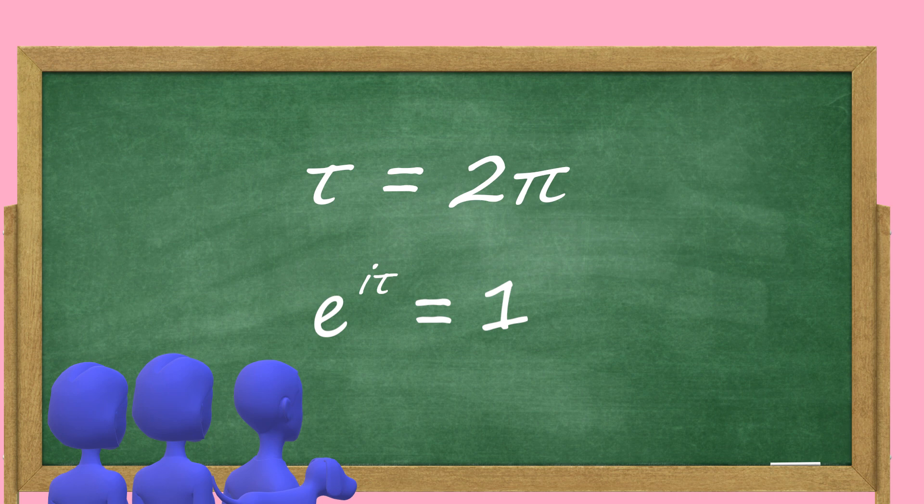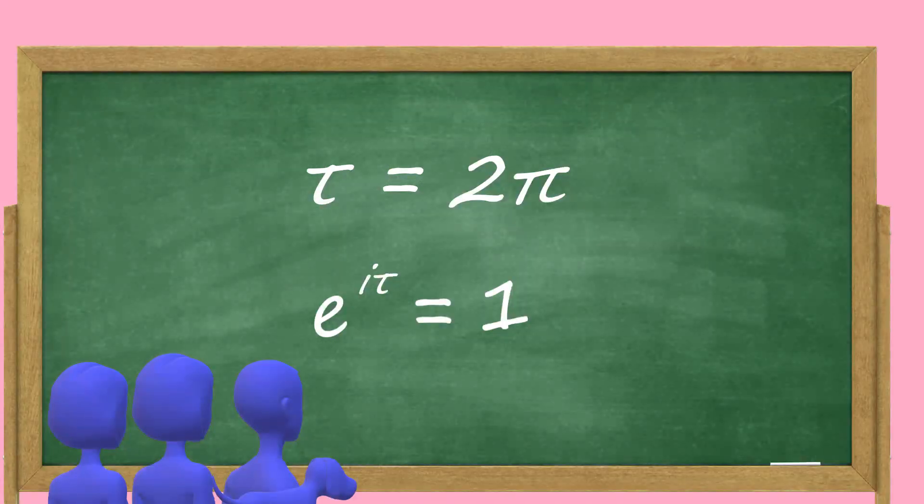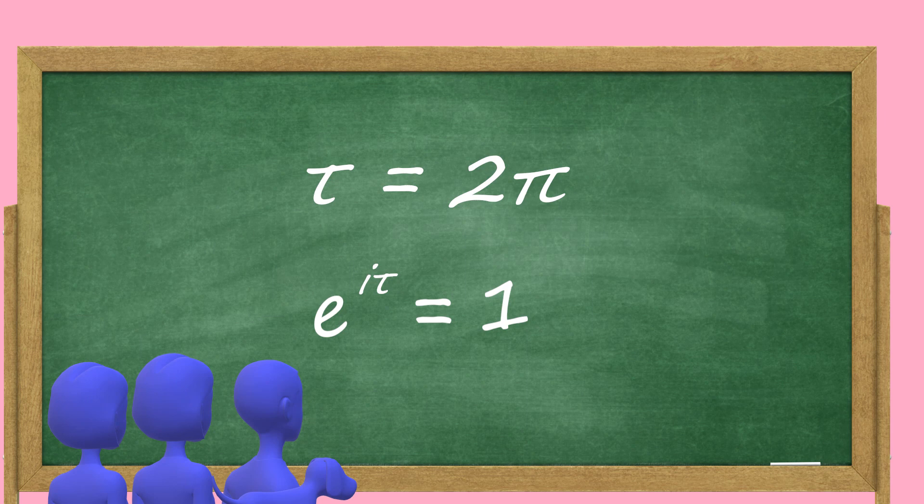Mathematical tauists prefer to use tau equals two pi, and write this in the form of e to the i tau equals one, and think that this is even more awesome for some reason. But regardless of which one you use, this equation relates some of the most important mathematical constants around.